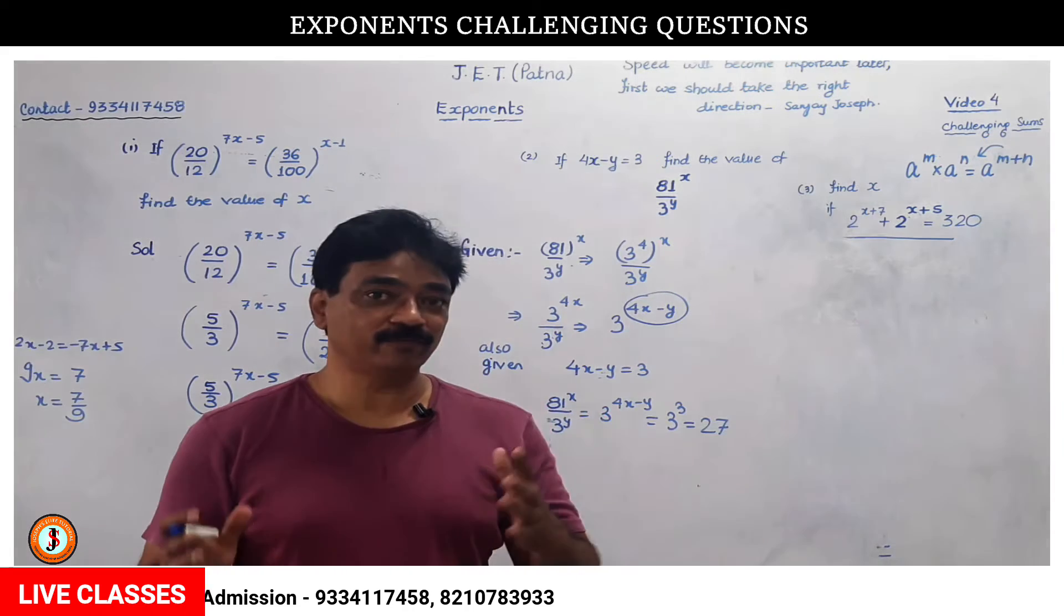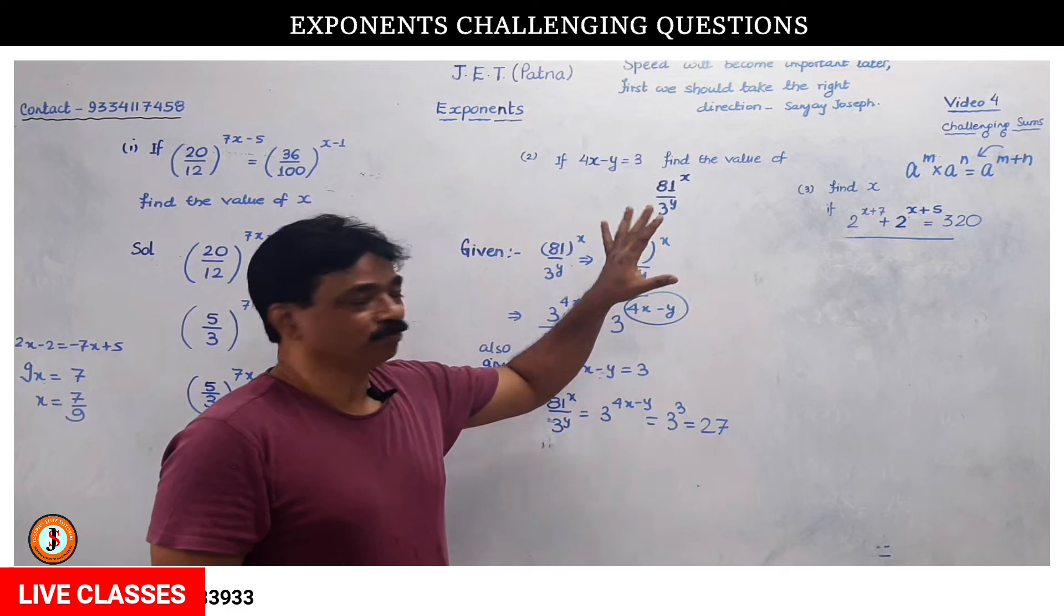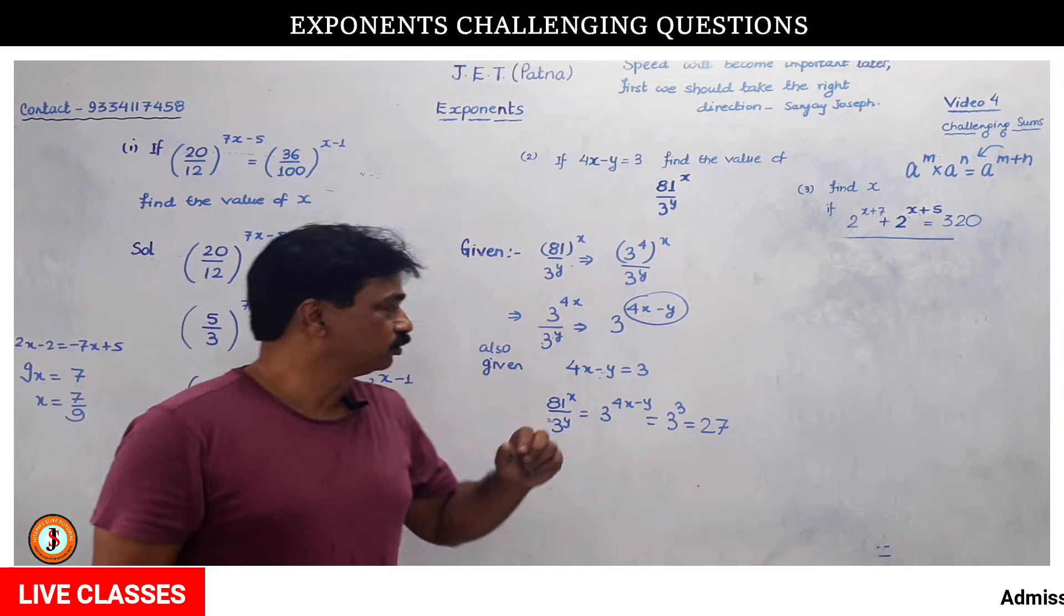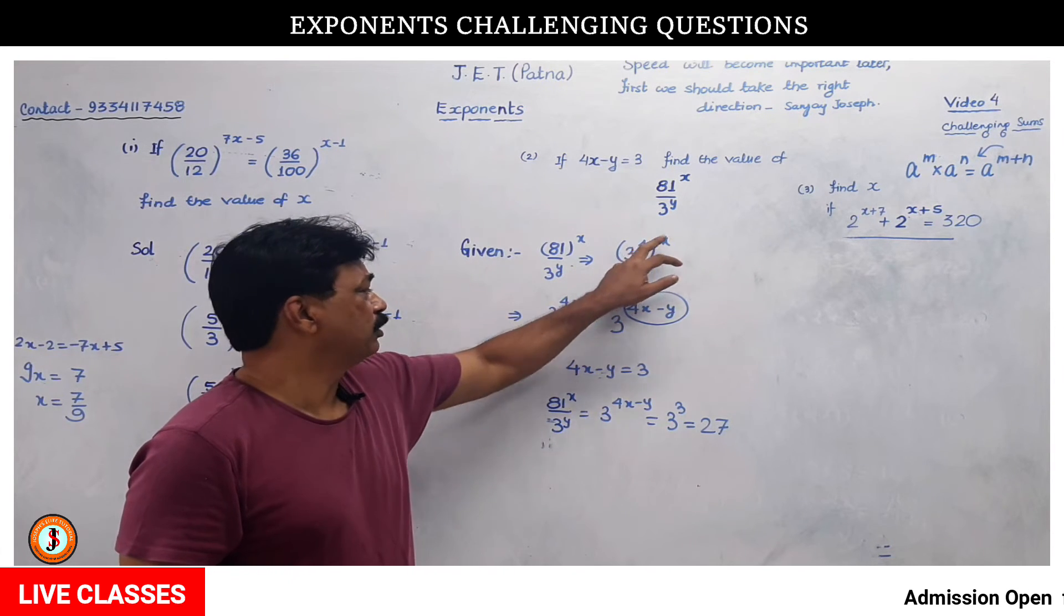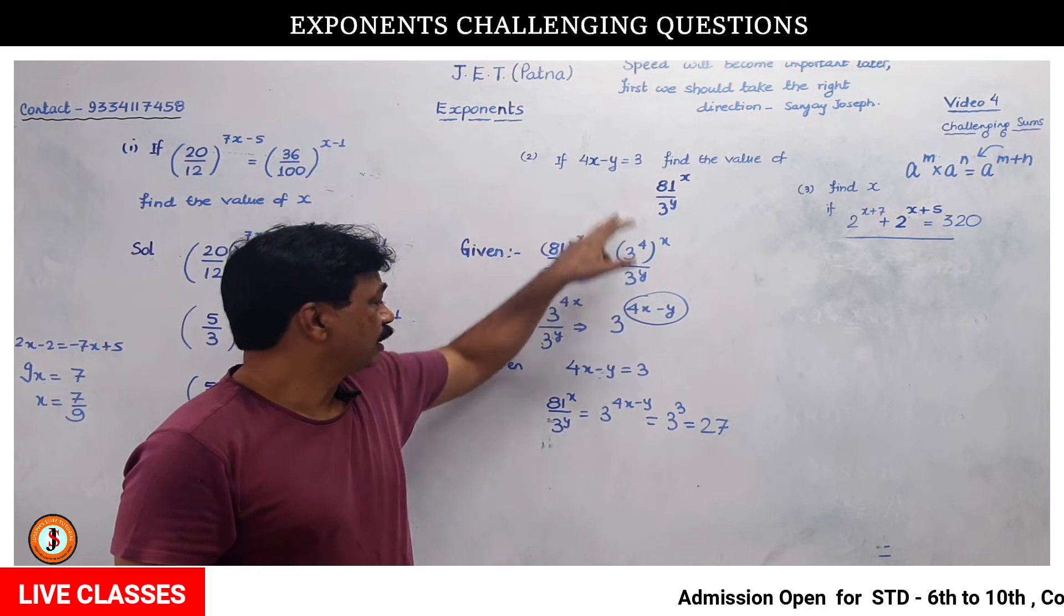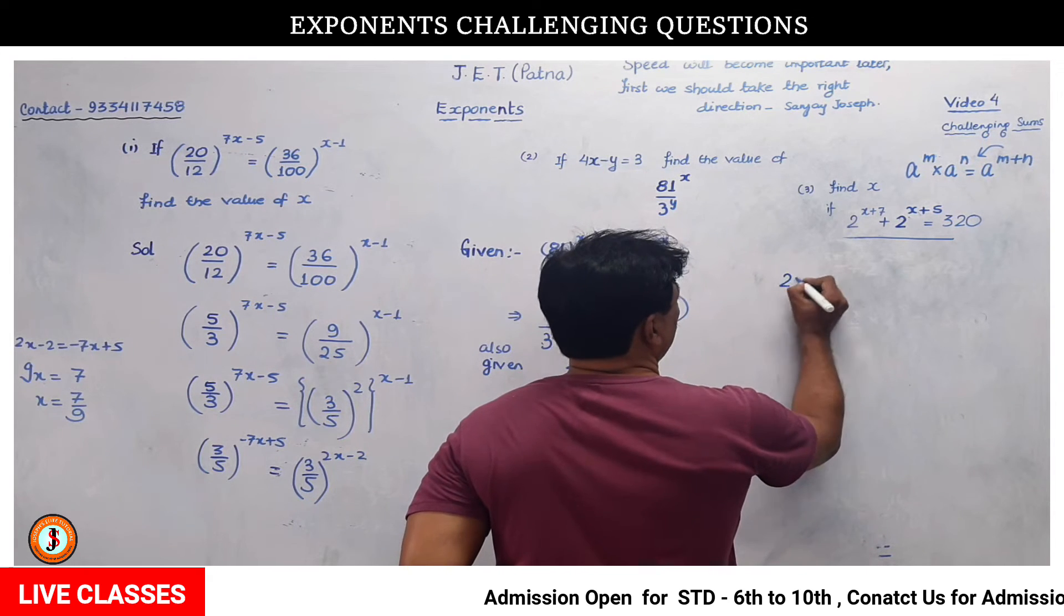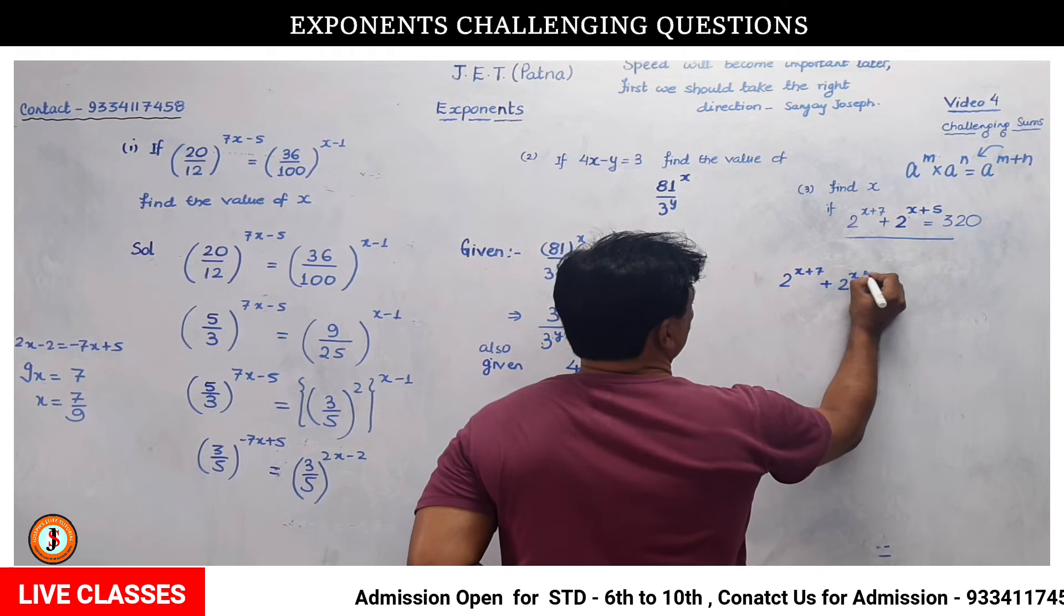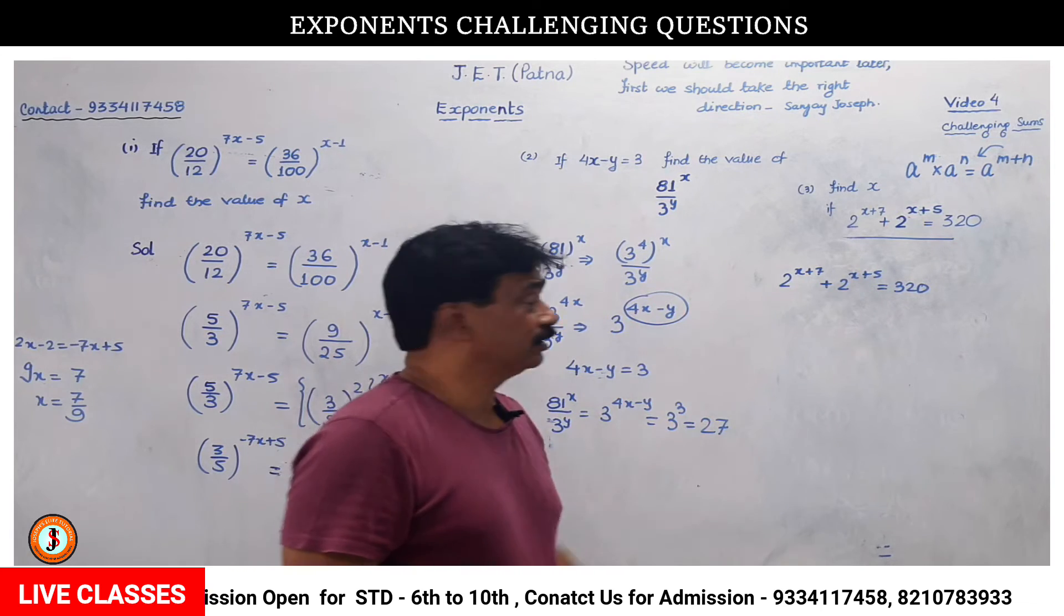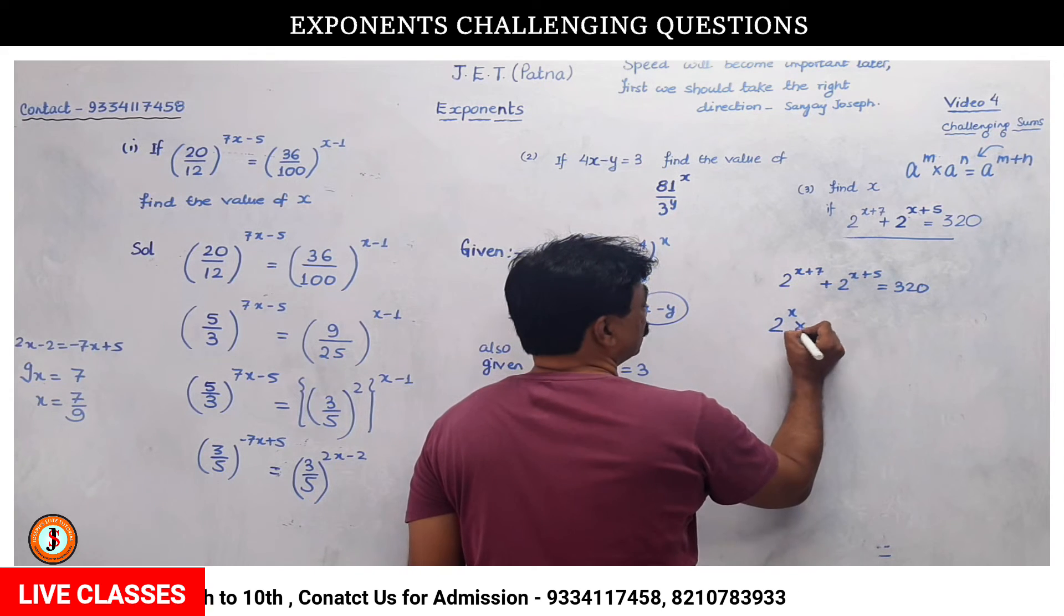You have to come down to that level where you can apply what is given. Here you have to know that 81 can be written as 3 to the power 4, then apply laws of exponents. The law is m to the power n can be written as m into n. Plus, you can write it in the same base.